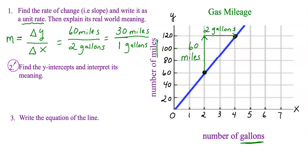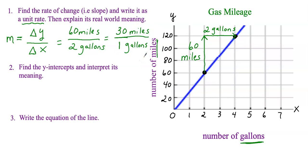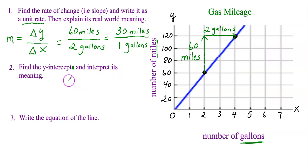If you're taking the GED or an algebra test and they ask you to explain the real-world meaning, write a complete sentence: 'Every time I drive 30 miles, I use up one gallon of gas.' Now let's look at question two: find the y-intercept and interpret its meaning.